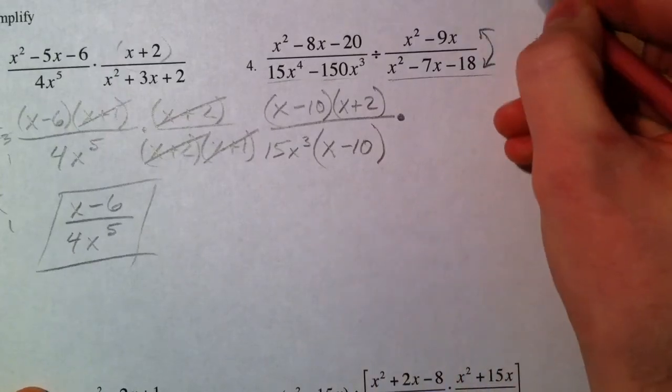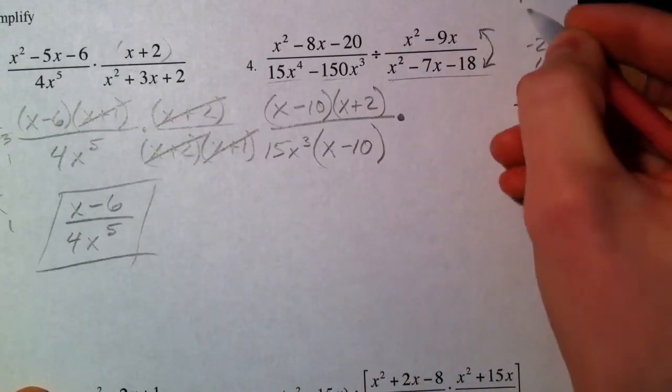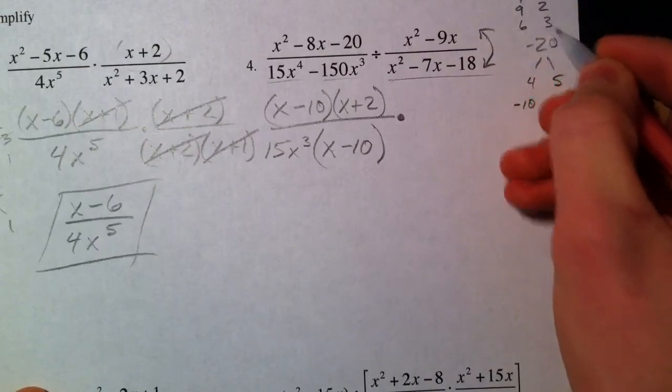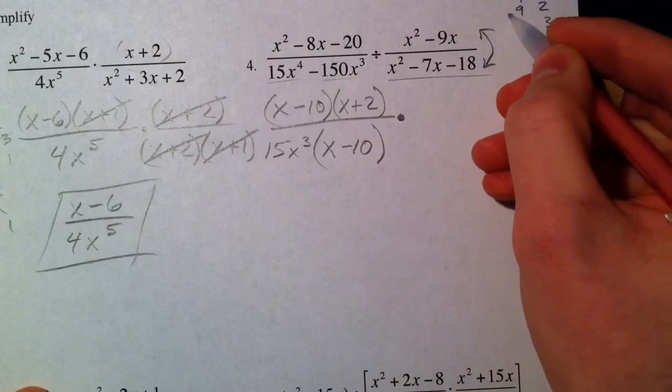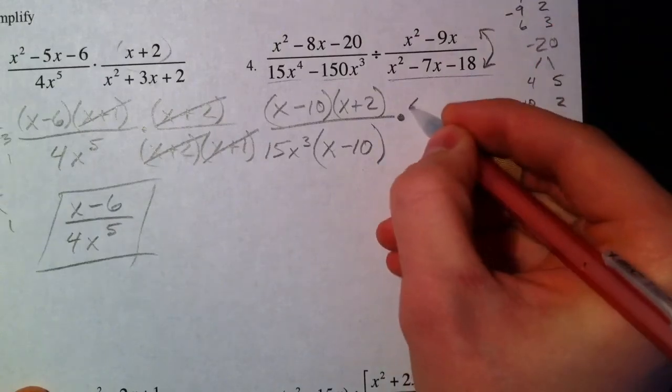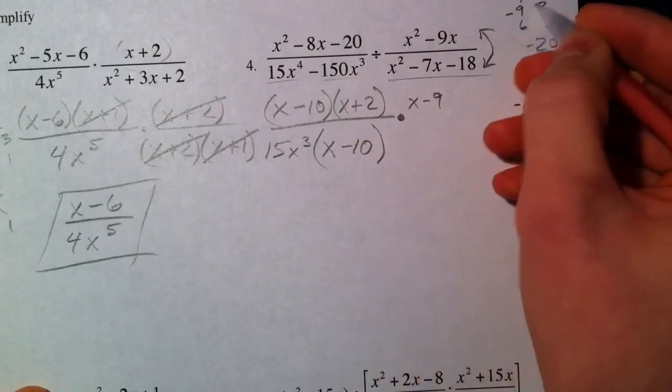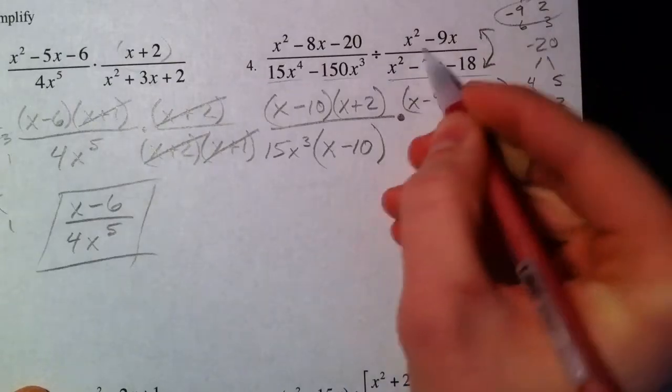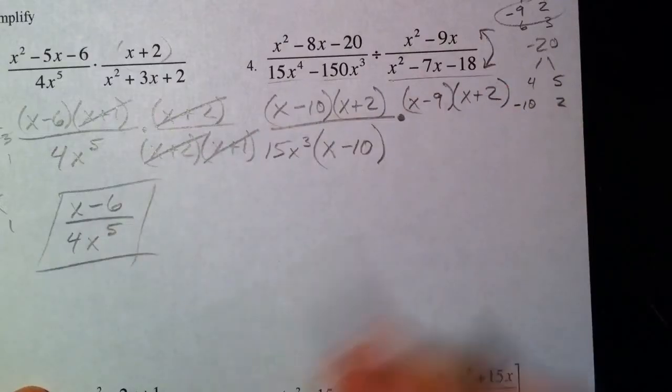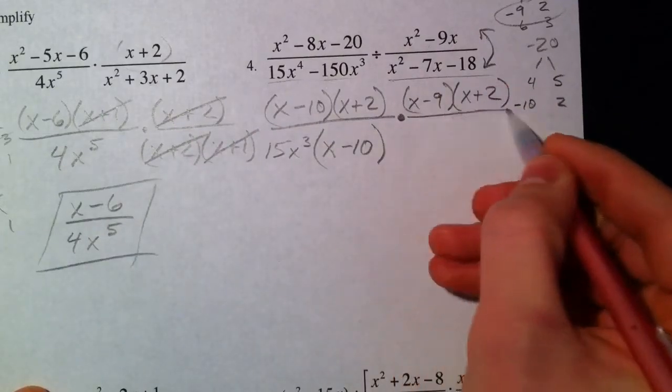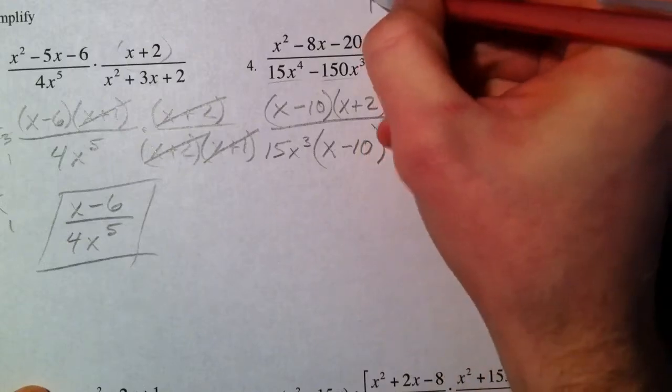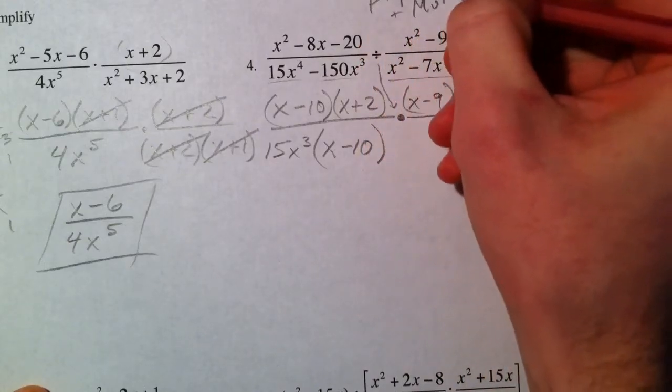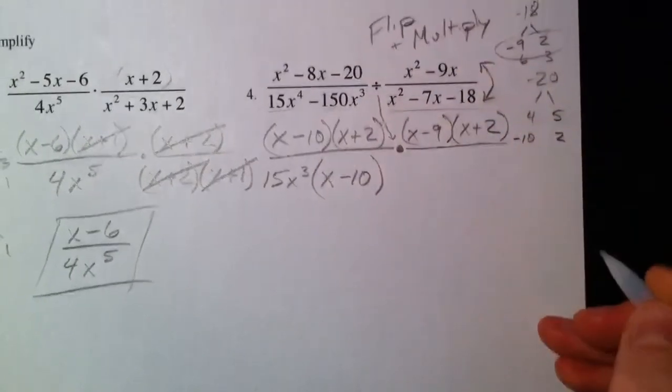Now we're flipping and multiplying, and so this minus 18 minus 7: we get 9 and 2, 6 and 3 work as well, but we want it to multiply to a negative 7, so I'm going to use the negative 9, X minus 9, X plus 2. Now that's not what X squared minus 9X factor to, it's what the bottom factor to, because notice flip and multiply.